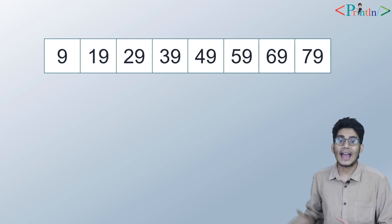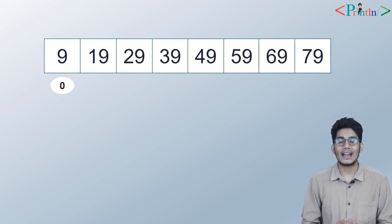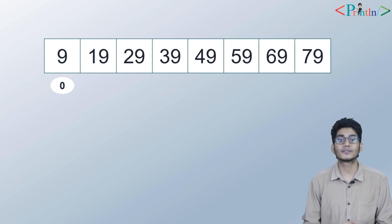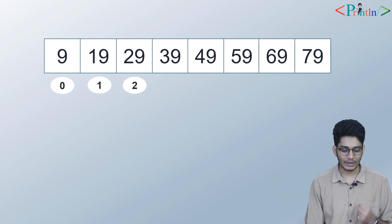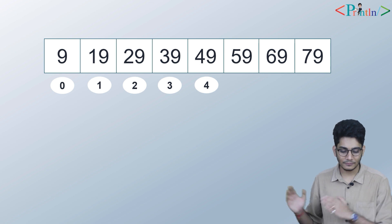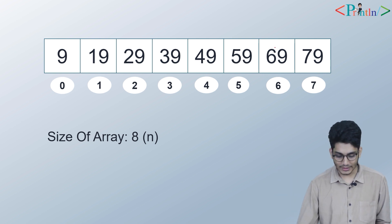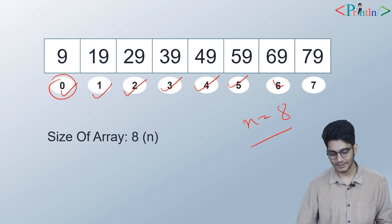As you can see on my screen, a number of blocks are written there — this is an array. An array contains a group of elements. When we declare an array, the elements lie from index 0 to n minus 1. In the 0th position we have 9, in the first position 19, second 29, third 39, then 49, 59, 69, 79. The size of the array is 8, so n equals 8. The indexes go 0, 1, 2, 3, 4, 5, 6, and 7.